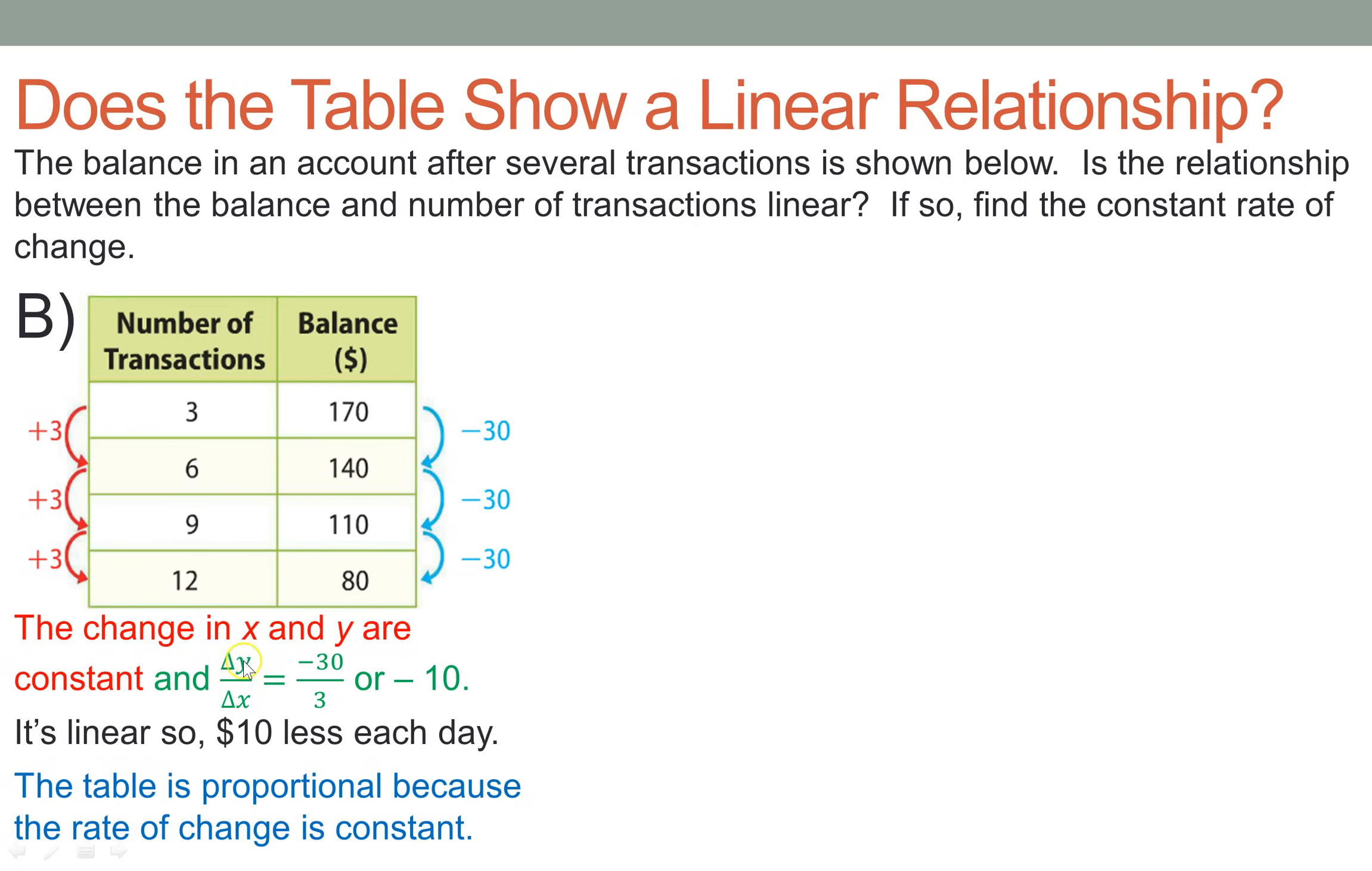That little triangle symbol means a change in Y, and the triangle symbol here means a change in X. Of course, that's kind of like a slope, which means it is negative 30 over 3, which is a division problem, which equals negative 10. So because the change in X and Y is constant, then that graph shows a linear relationship. It's $10 less each day. And the table is proportional because the rate of change is constant. And if it's proportional, it's linear. And if it's linear, it's proportional.